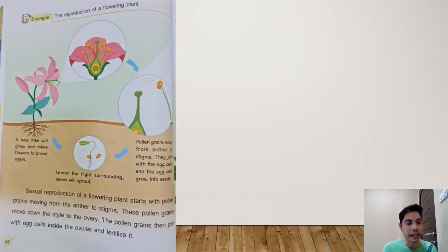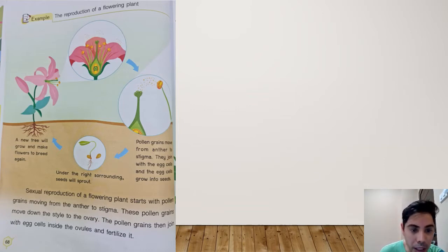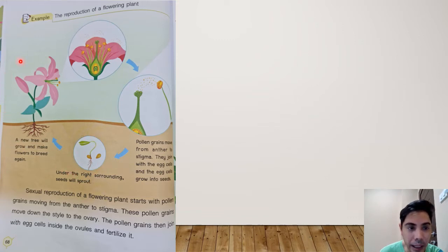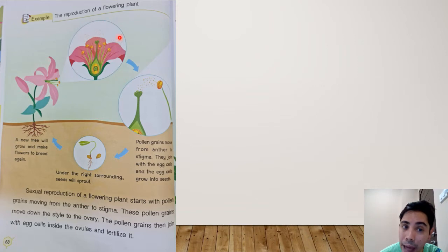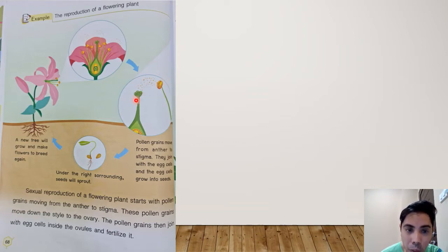We have here a reproduction of a flowering plant. We know that plants begin with a seed, and it will grow into a seedling, and grow into a tree that has flowers. And that flower can make another flower using its pollens. These are pollen grains that will go inside the body of the flower — that will make another flower.